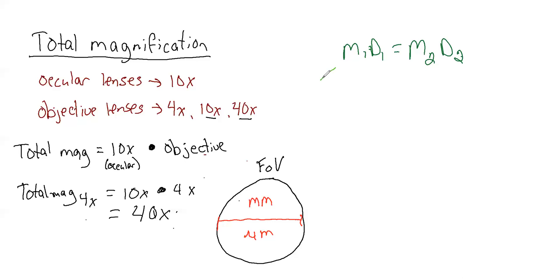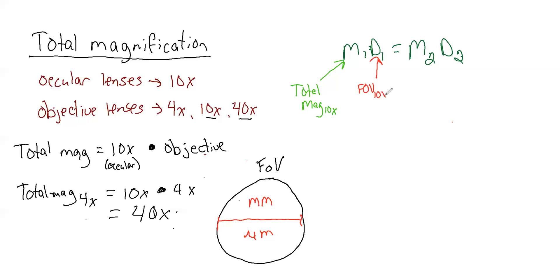So M1 is going to be the total magnification at 10x, and D1 will be the field of view diameter at 10x. The other side will equal whatever we want to find. If we want to find the 4x first, then M2 will stand for the total magnification at 4x, and D2 will stand for the field of view diameter at 4x.